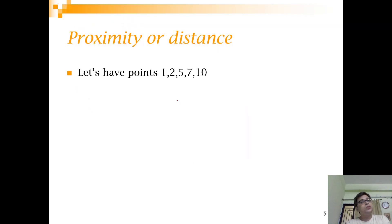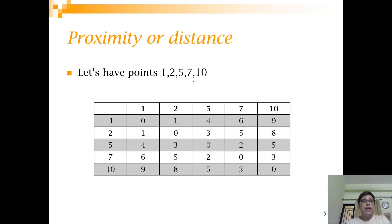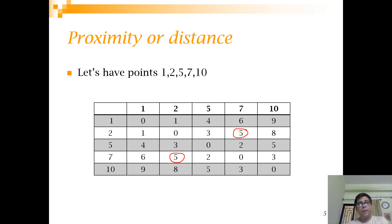Let's take a simple example with univariate points: 1, 2, 5, 7, and 10. We calculate the proximity matrix. One property is that it is always symmetric — the distance from 2 to 7 (which is 5) is the same as from 7 to 2. Another property is that the diagonal is always 0, since the distance of any point with itself is 0.